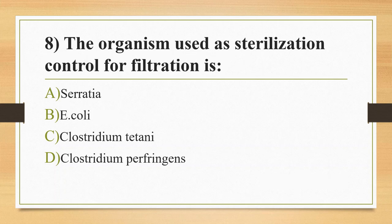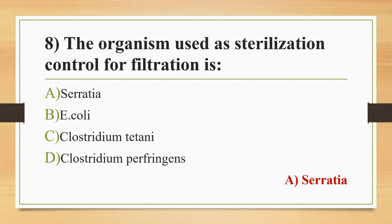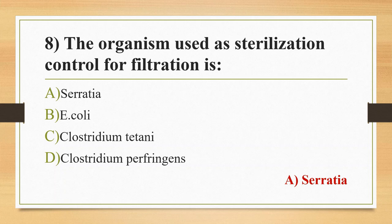Eighth question: The organism used as sterilization control for filtration is? Option A, Serratia; Option B, E. coli; Option C, Clostridium tetani; Option D, Clostridium perfringens. The answer is Option A, Serratia, with a size of 0.5 to 0.8 micrometers in diameter. For hot air oven, the sterilization control is spores of non-toxigenic strains of Clostridium tetani. For autoclave, the sterilization control is spores of Bacillus stearothermophilus.